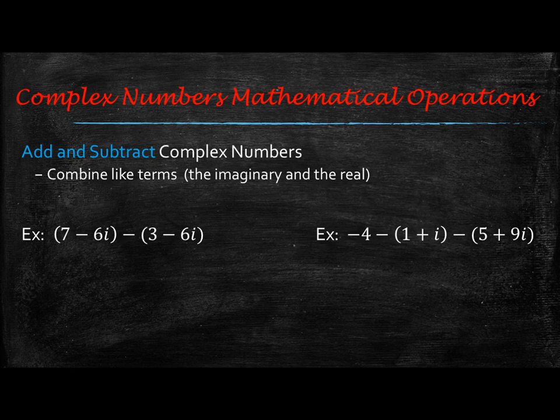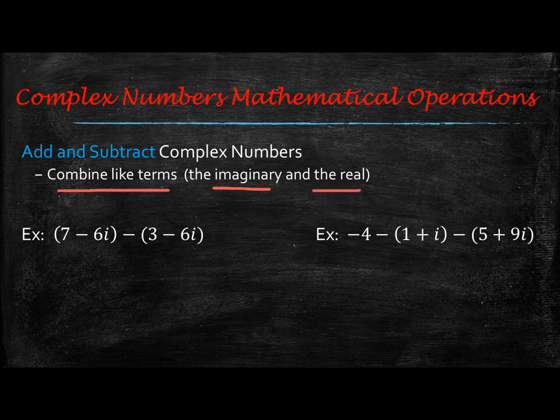First we're going to look at what you need to do when you're adding and subtracting complex numbers. When you add and subtract, you want to just combine like terms — you'll combine all the imaginary parts together and combine all the real parts together.